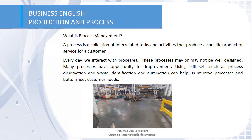Now moving on to process management. Process is the interaction between production and all the activities covered by production management. These processes are interrelated tasks and activities that produce a specific product or service for a customer. You have to use a set of skills such as process observation and waste identification and elimination that can help you to improve your process to better meet the customer's needs.